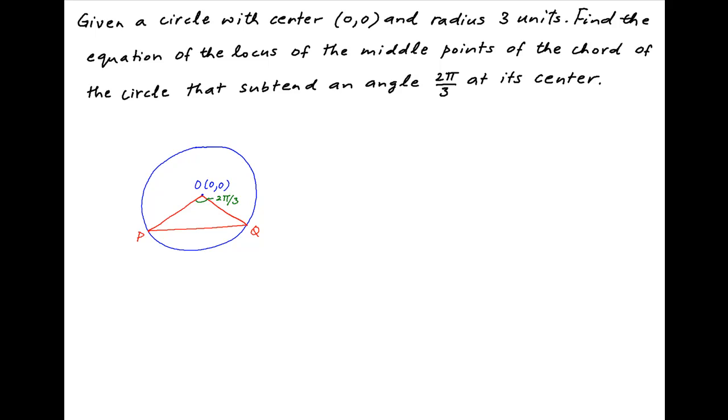Now let's drop a perpendicular from the center O onto the chord PQ using a standard result of geometry. We know that the foot of the perpendicular N will bisect the chord PQ and angle PON is equal to angle QON. Both of them are therefore equal to π/3.